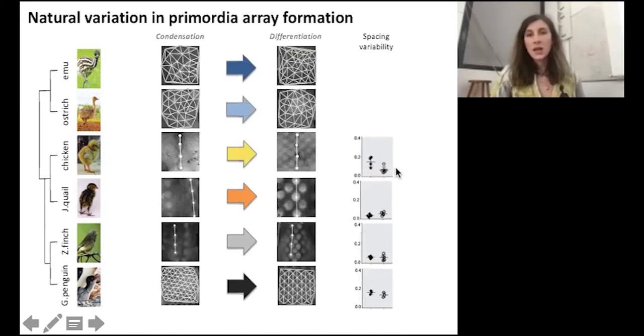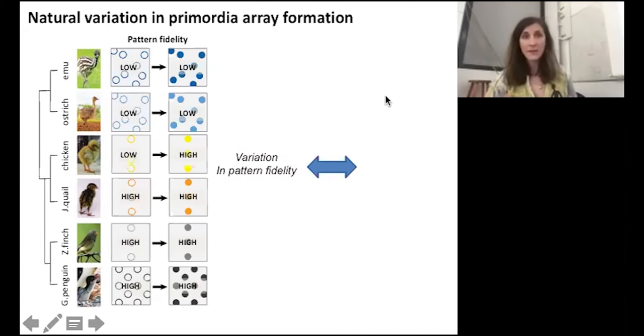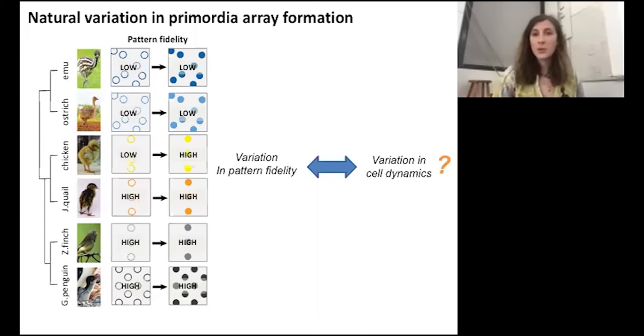In emu and ostrich, it remains high across the whole patterning process. So here we show that there is variation in pattern fidelity between bird species. Now I will describe the variation in the cellular dynamics that occurred prior or during pattern establishment.